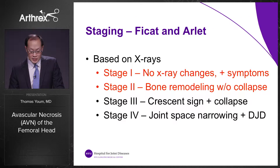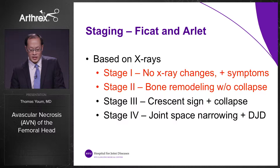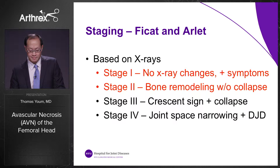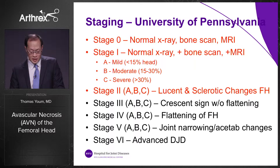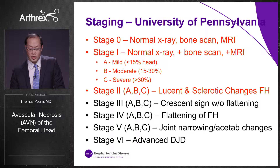There are various staging systems. One is described by FICAT and Arlid; I highlighted in red the important stages one and two, which represent pre-collapse of the femoral head — this is usually when femoral head core decompression is indicated. The University of Pennsylvania staging has six stages, with stage six being the most advanced. I also highlighted stages zero to two, which are pre-collapse stages when core decompression may be indicated.